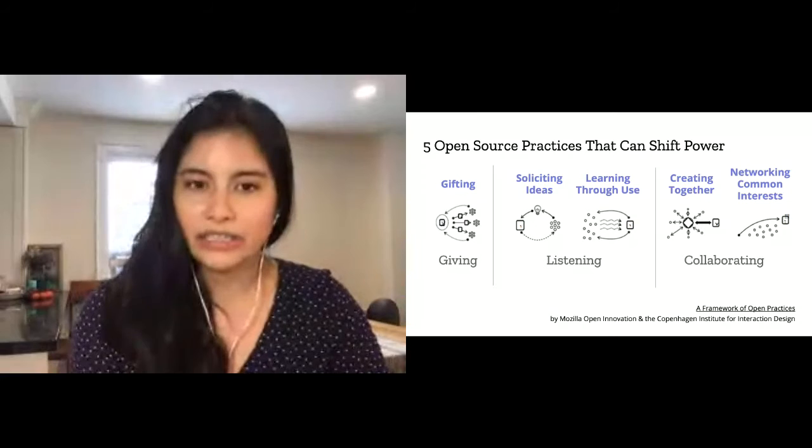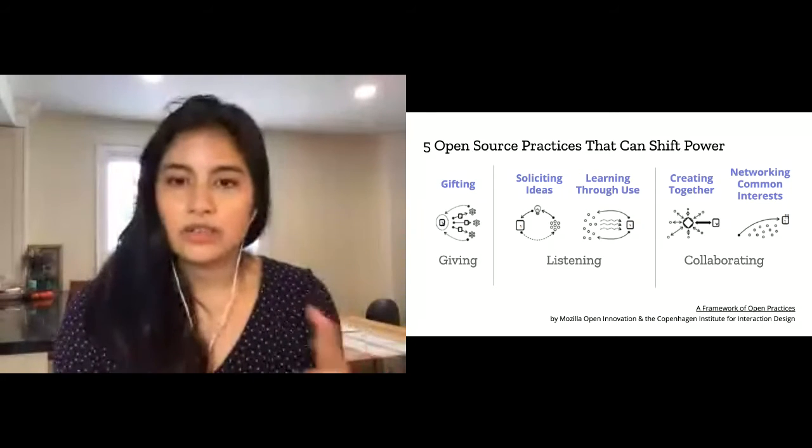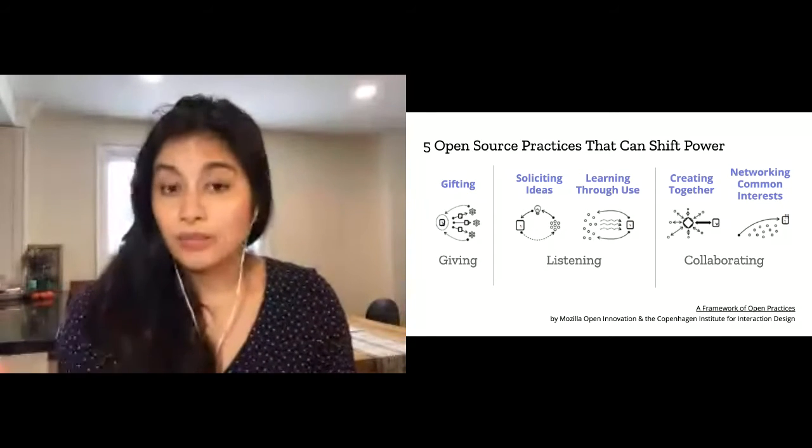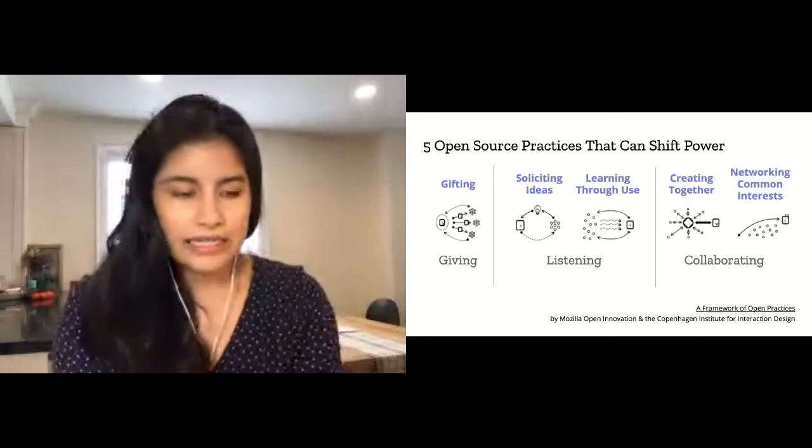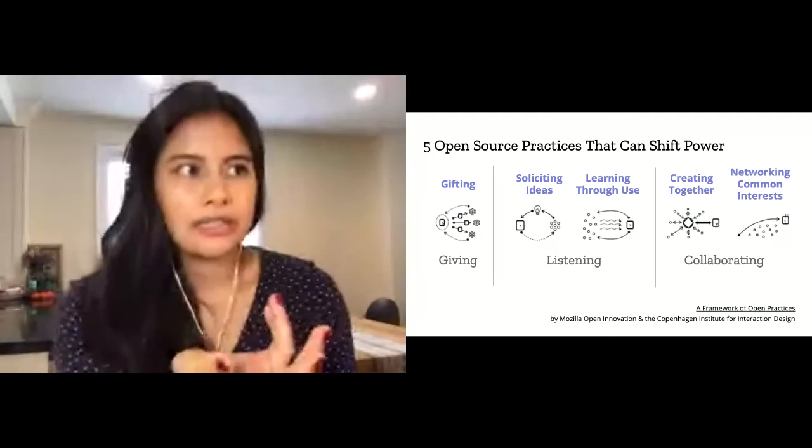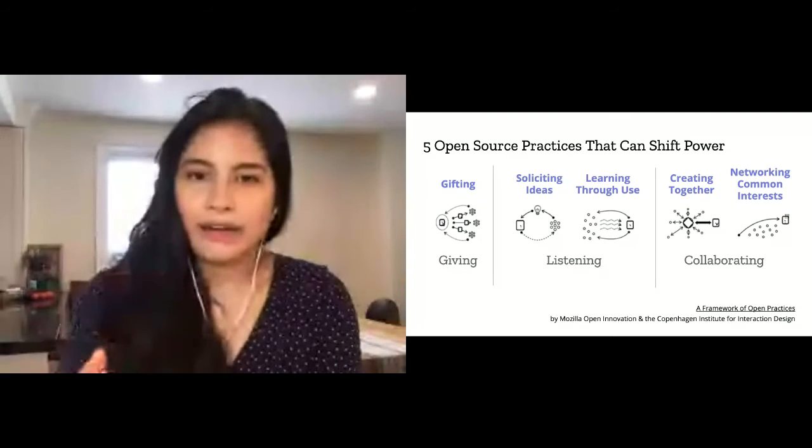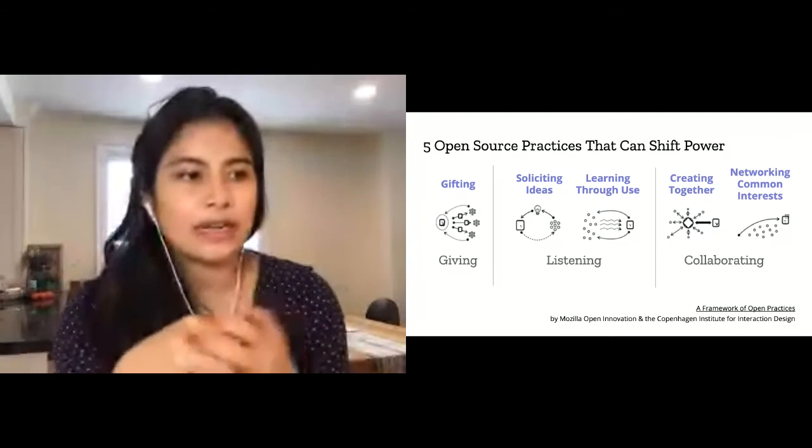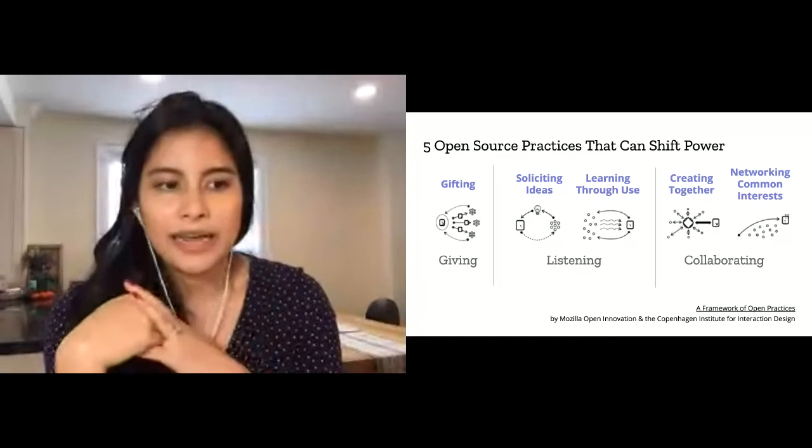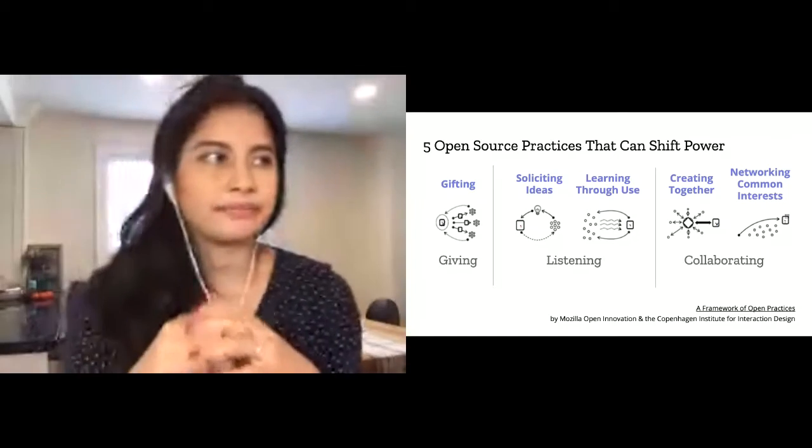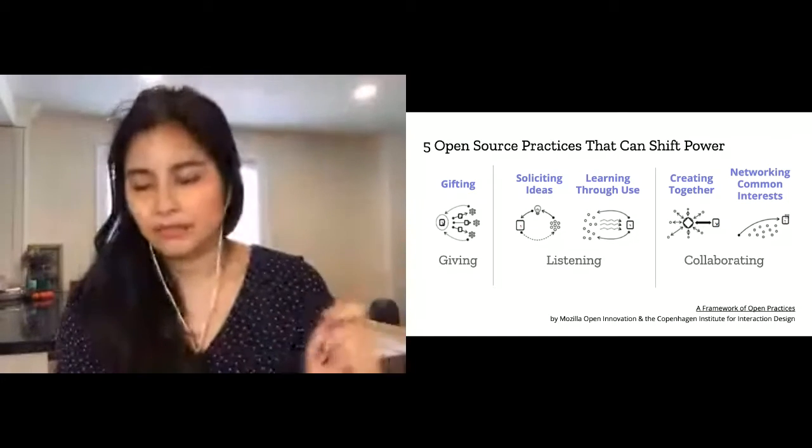I want to talk through five open source practices that can shift power. I normally talk about these in terms of community interactions—five different ways you can interact with your community and build something better than you would have otherwise. But I want to introduce these to you as ways to shift power. This is a study that Mozilla did with the Copenhagen Institute for Interaction Design a few years ago, and they made these lovely diagrams.